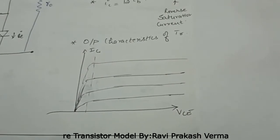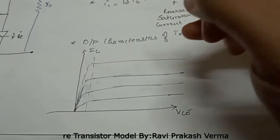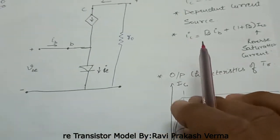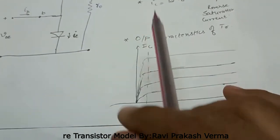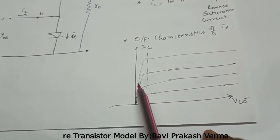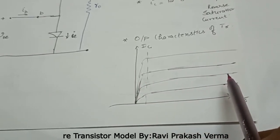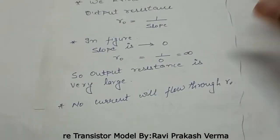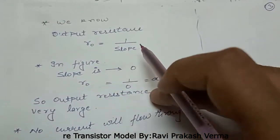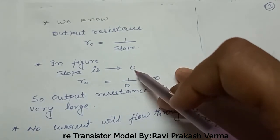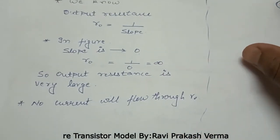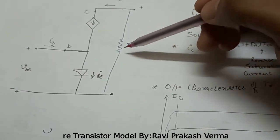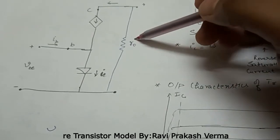In the output characteristics of a common emitter transistor, the output resistance is the inverse of the slope. From the graph, the slope is very small, tending to zero. If the slope tends to zero, then the output resistance tends to infinity. Therefore, no current passes through the output resistance RO, and the current from RO will be zero.